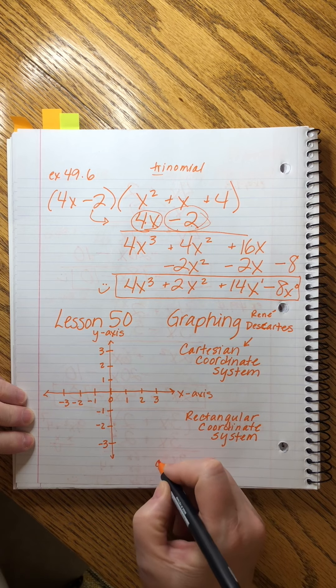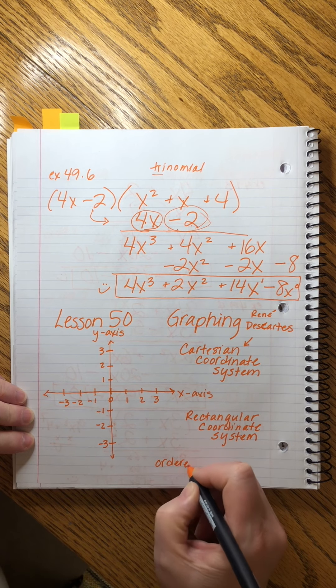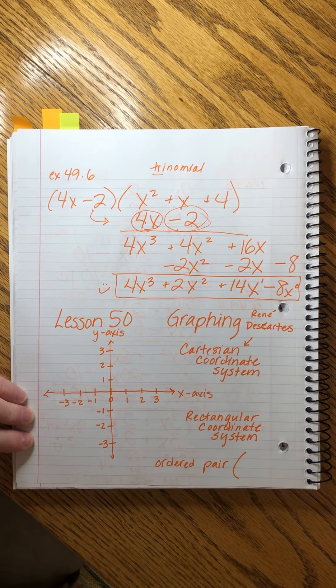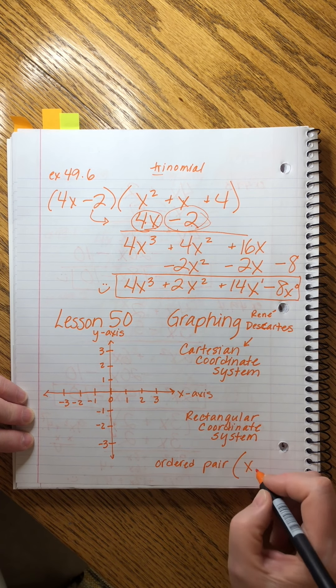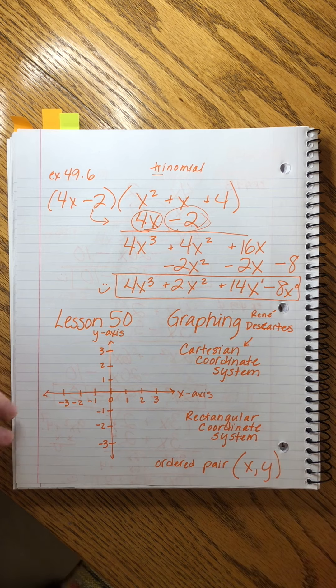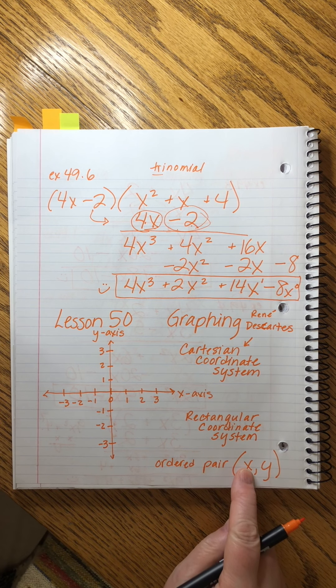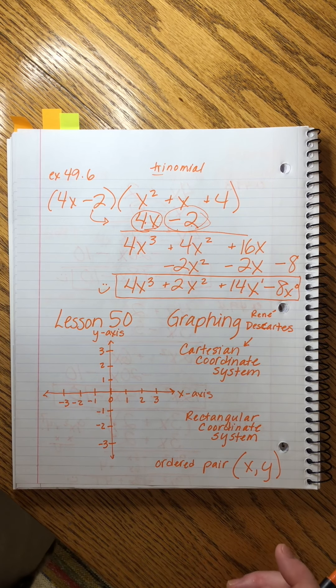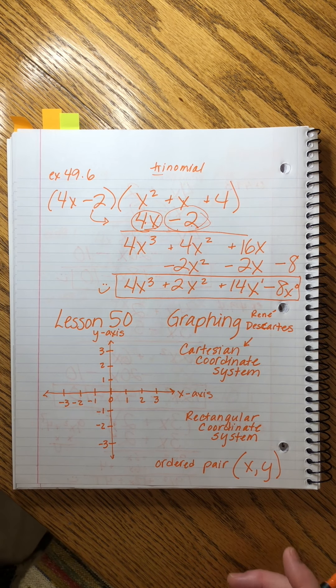The address takes the form of what we call an ordered pair. We always write it in this format. We do parentheses, and then I'm writing the generic format, right? X and Y. We put in the value of the X coordinate, the value of the Y coordinate that we want to graph. So let's do an example.